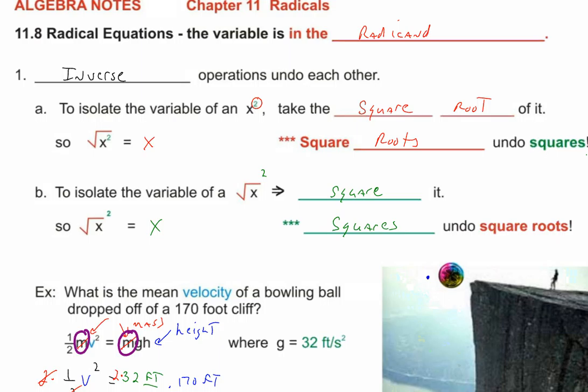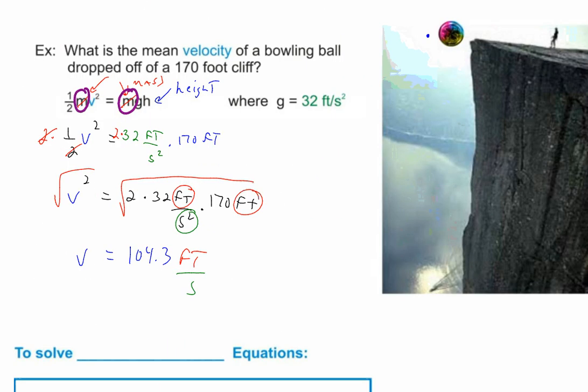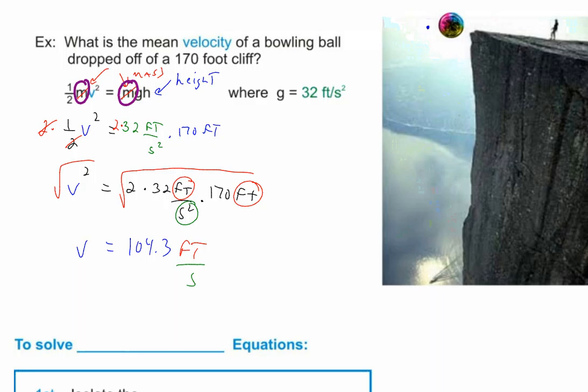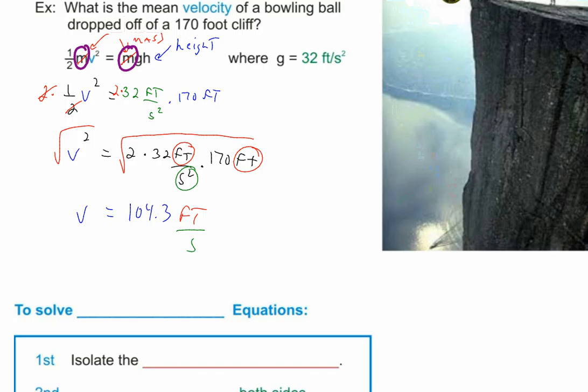So yesterday we started with radical equations and I said the big key is square roots undo squares and squares undo square roots. That's the big key. And we looked at a problem here that was really more about getting us used to taking the square root of both sides. We dealt with gravity and a bowling ball going off a cliff, and we did a little bit of practice with units as well.